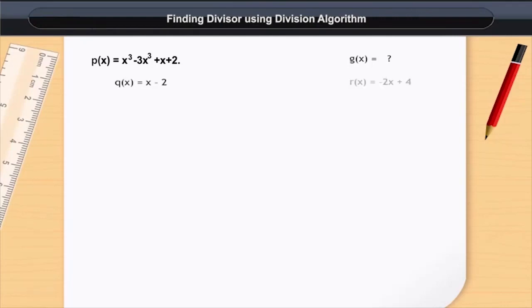So we get q(x) is equal to x - 2 and remainder r(x) is equal to -2x + 4. Now we need to find g(x).